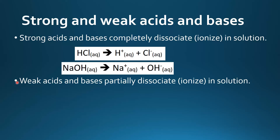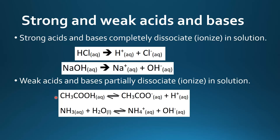Next, the definition of a weak acid and base: weak acids and bases partially dissociate or ionize in solution. Here's an example of a weak acid — this is ethanoic acid — and here's an example of a weak base — this is ammonia. For weak acids and bases we use the equilibrium sign, meaning there's an equilibrium between the ethanoic acid and the ethanoate ion and the H+. For weak acids and weak bases the equilibrium lies to the left.